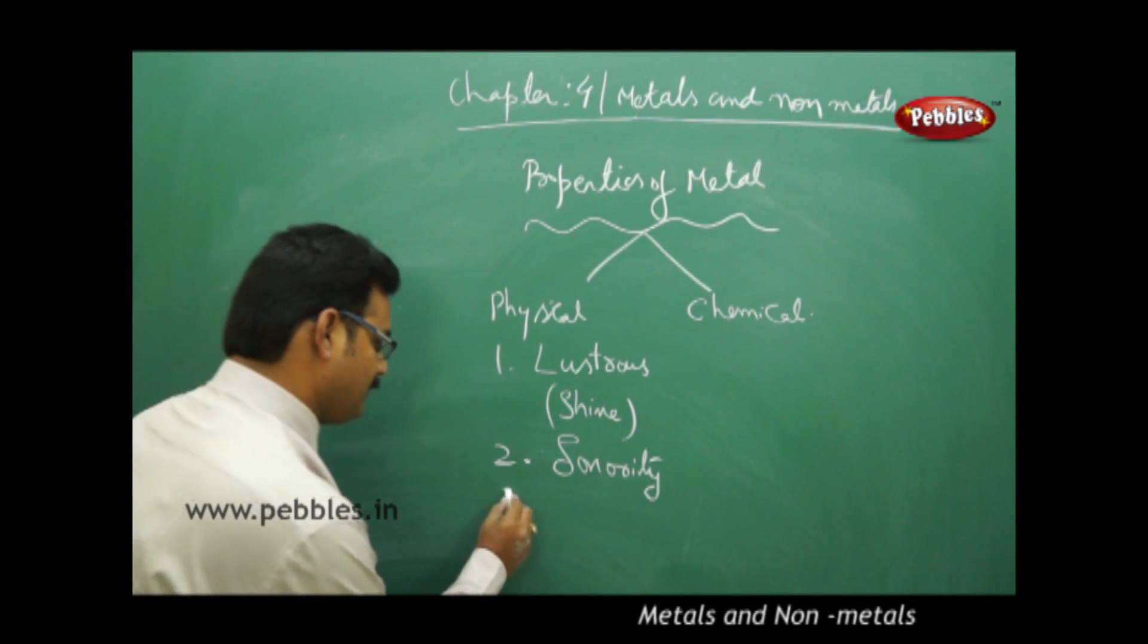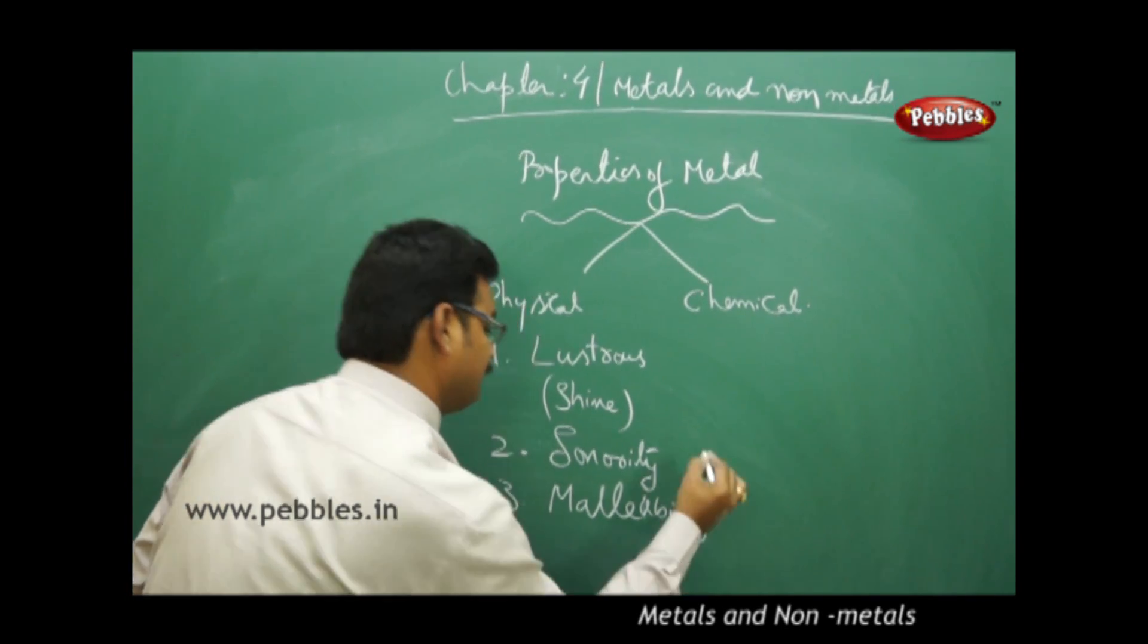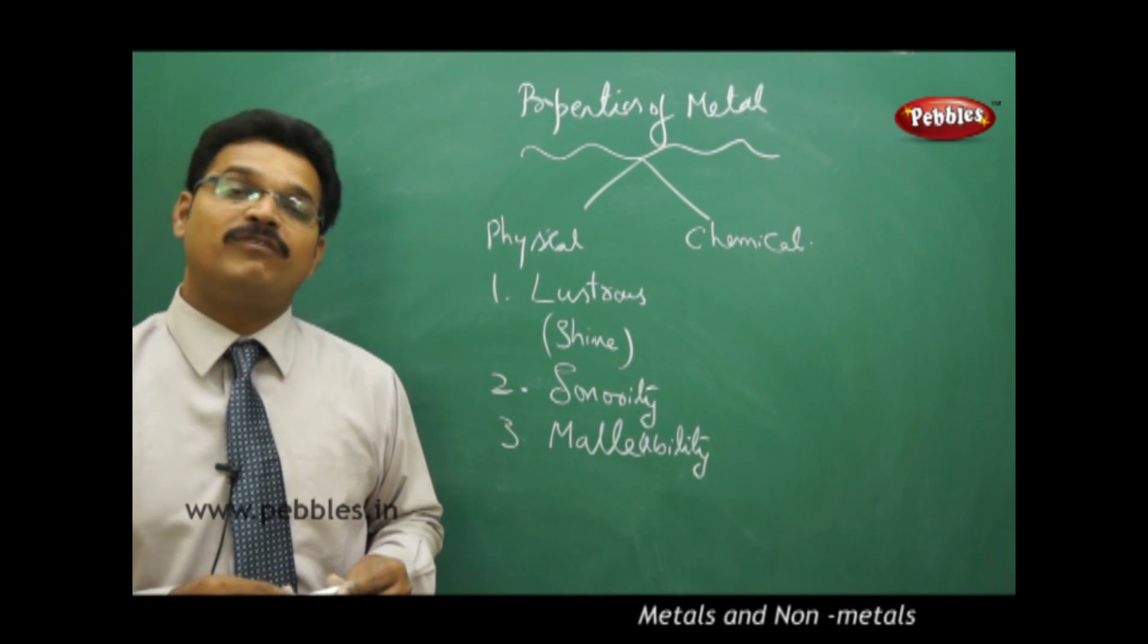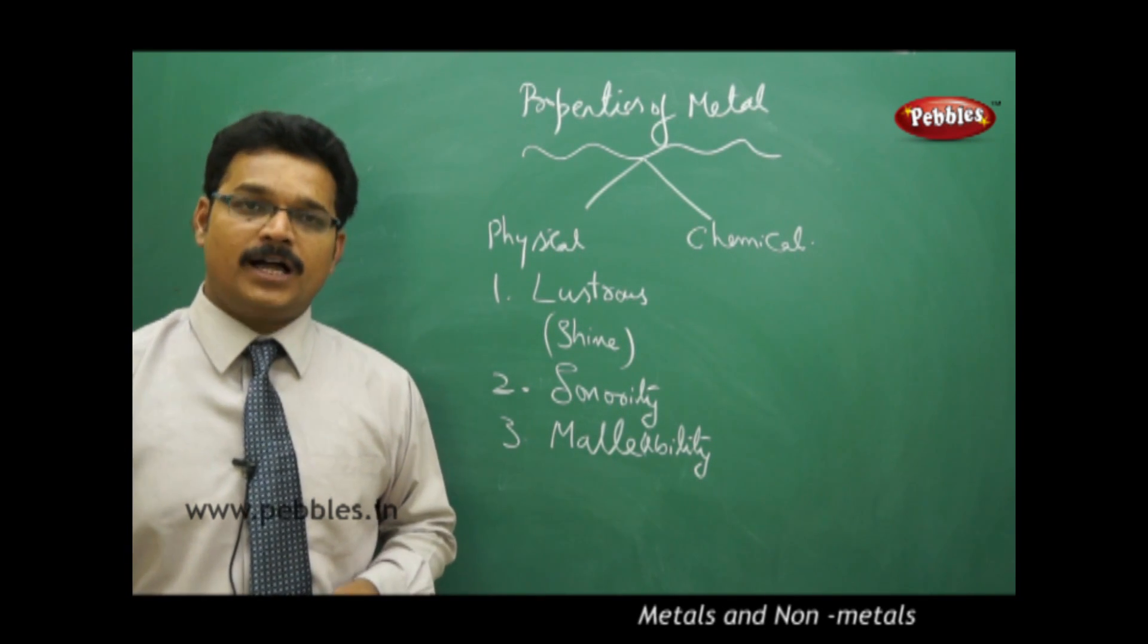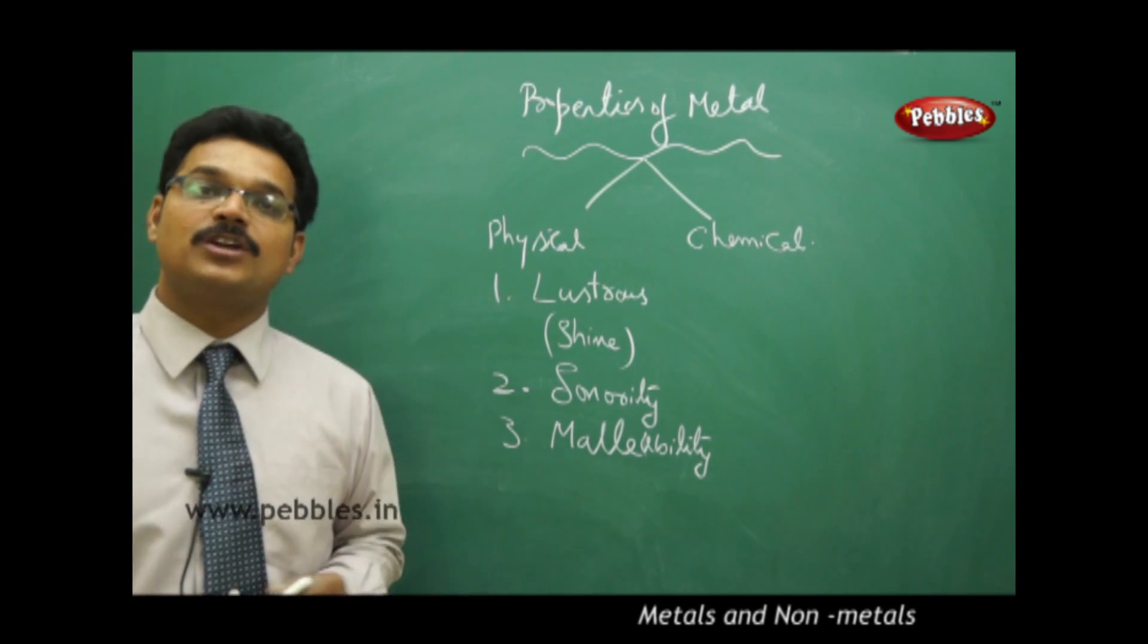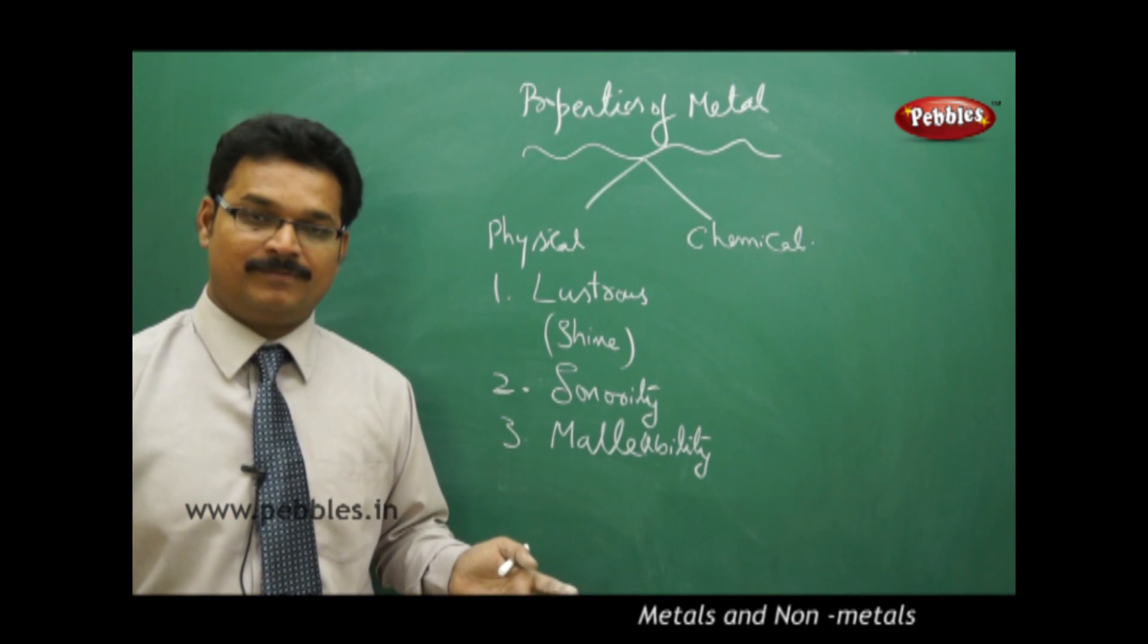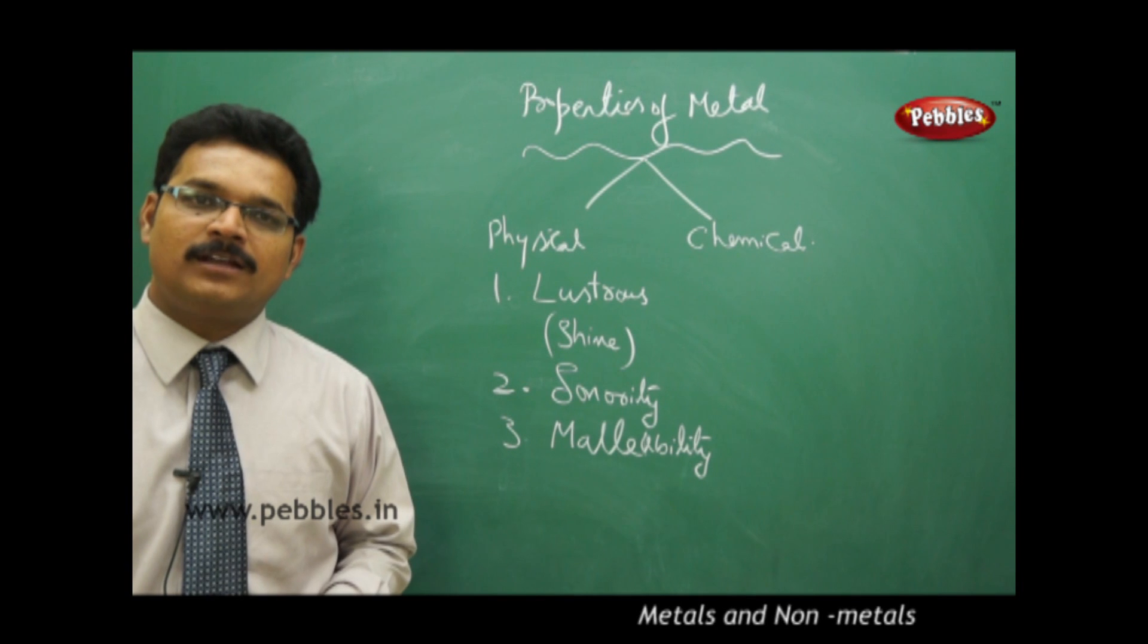The next property is malleability. What is malleability? When you see metals like iron, copper, aluminum, or silver, you'll find them in different shapes and sizes. How is this possible? Sometimes you can find iron in cylindrical shape, sometimes spherical, sometimes rectangular or triangular. All these shapes are possible because of this property called malleability. Malleability means metals can be stretched and molded into different shapes.